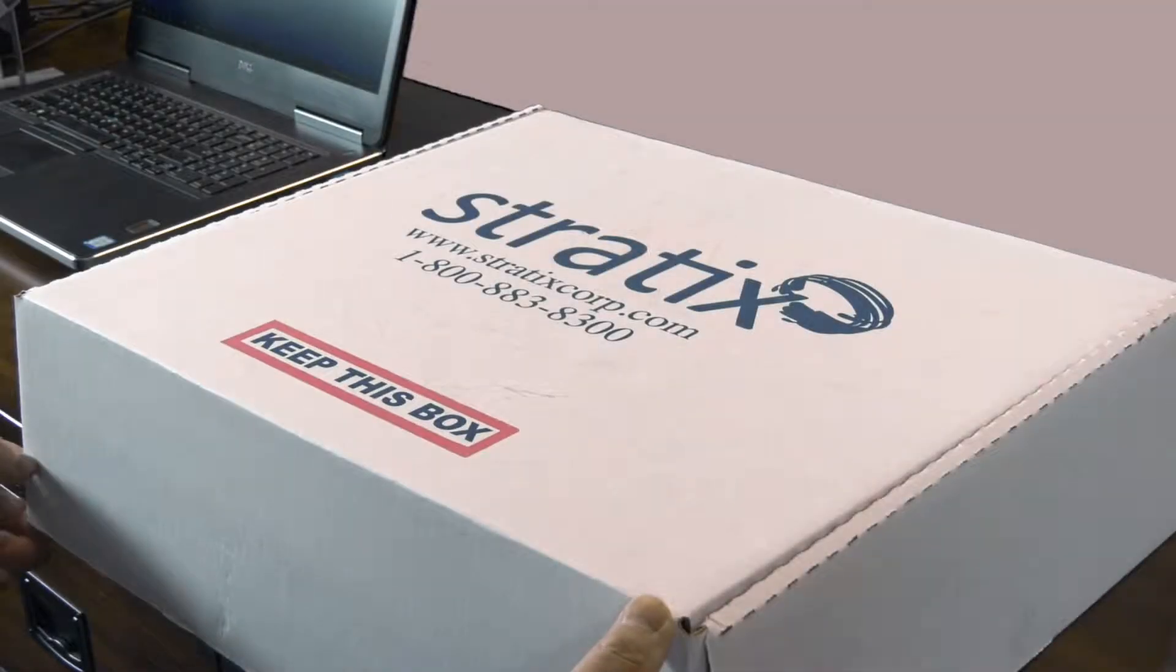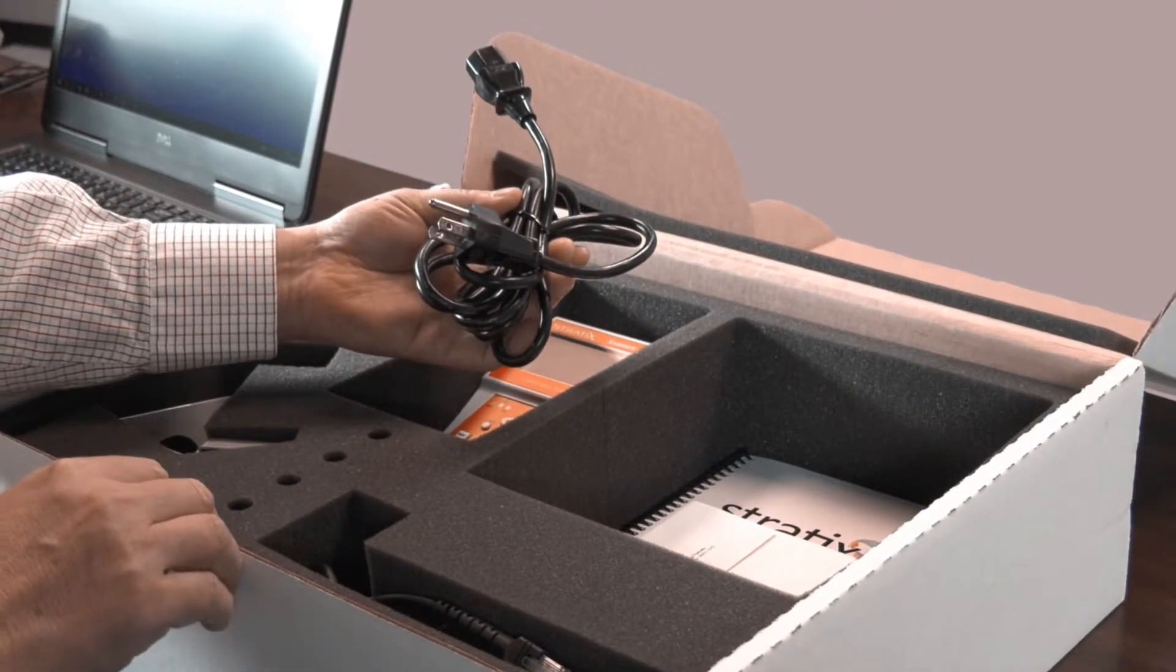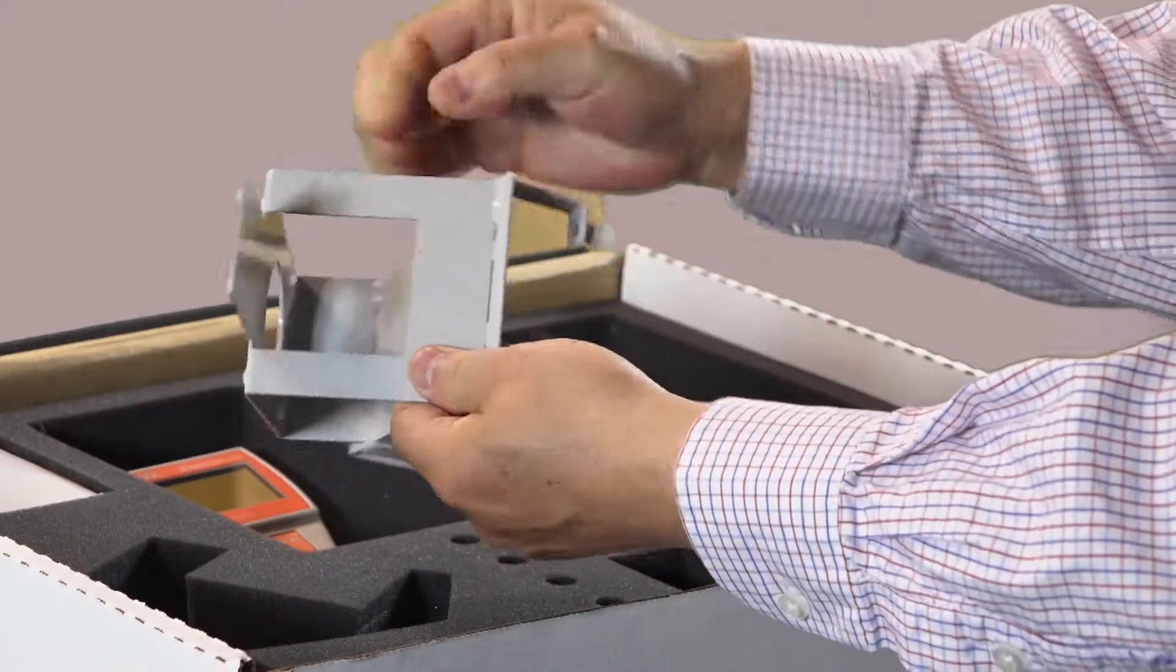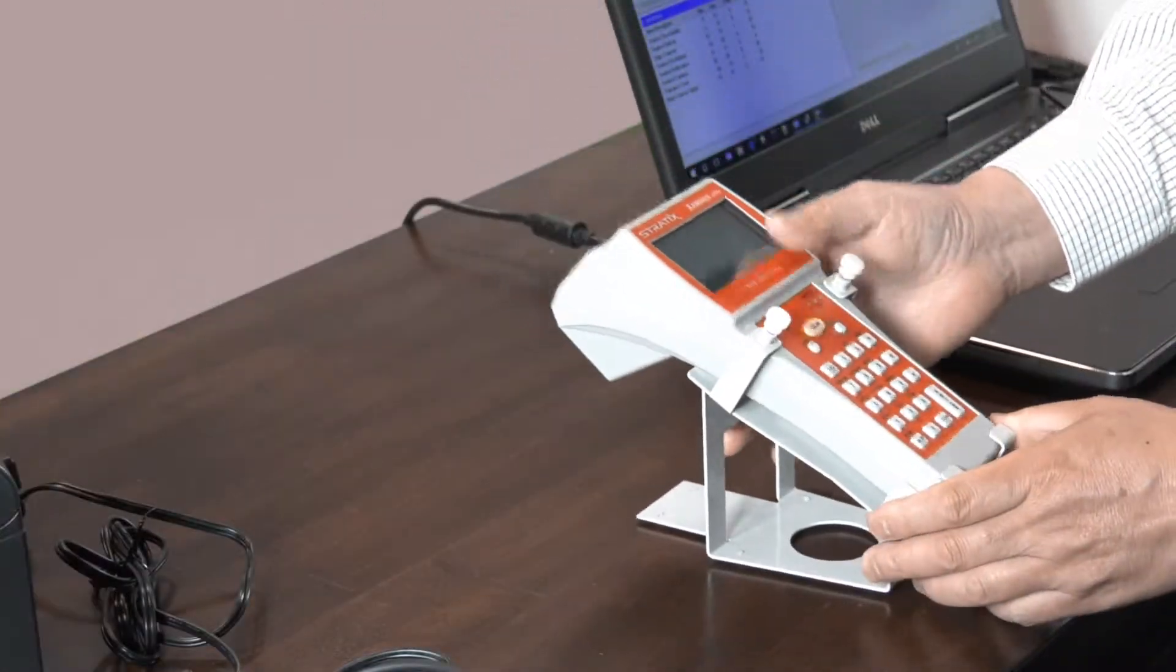Begin by removing the Examiner Elite Verifier from the packaging and taking out the power cables. There will be three separate power cables. Next, remove the verifier stand from the box and place the Examiner Elite Verifier into the stand.